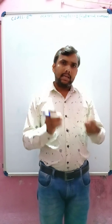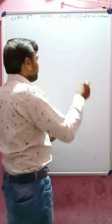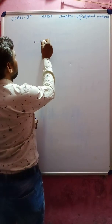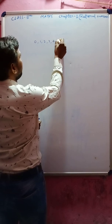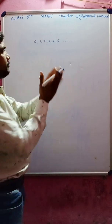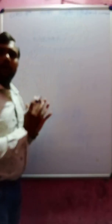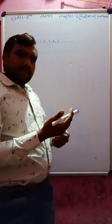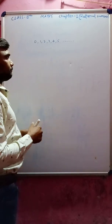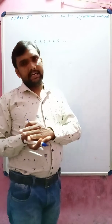After that we move to whole numbers. Whole number means if we include zero into the natural numbers, it becomes a whole number. For example: 0, 1, 2, 3, 4, 5 and so on. If we remove zero from here, these are called natural numbers, and if we include zero to the natural numbers it becomes whole numbers.